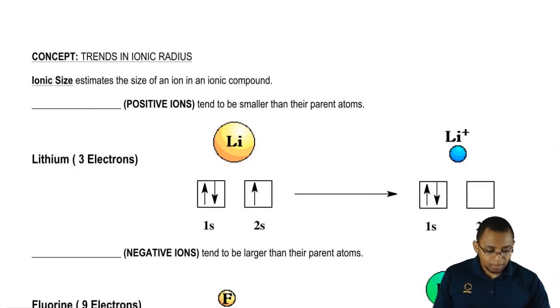We're going to say that positive ions are called cations. Cations tend to be smaller than their parent atoms because when it comes to ionic radius as well as atomic radius, it's all about electrons. The more electrons you have, then the bigger you are, especially for ionic radius.